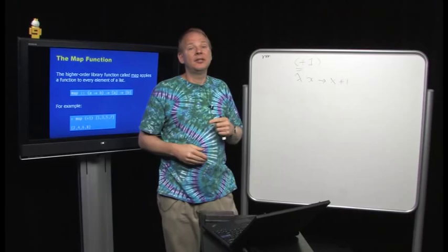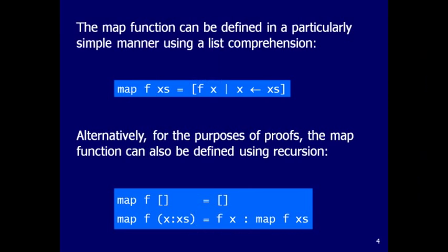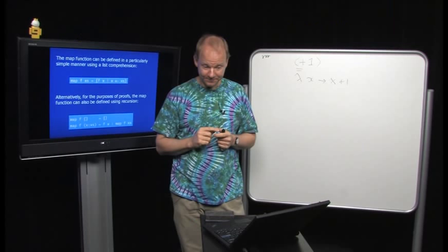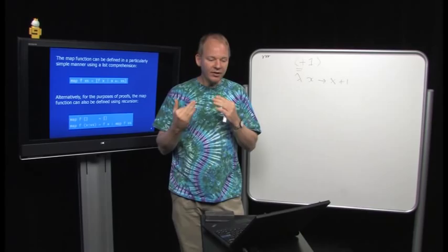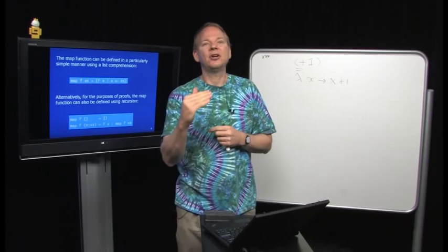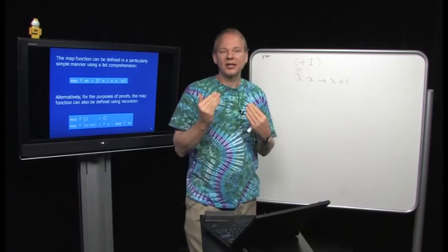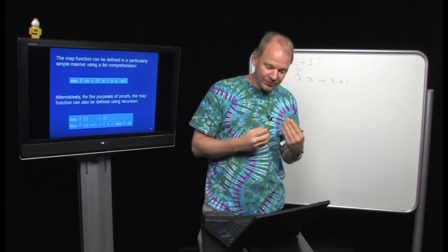There are two ways to define `map`. The first uses list comprehensions: `map f xs = [f x | x <- xs]` — you take all elements out of the list and apply the function to each, returning that as a list. For purposes of proofs it's often easier to define map recursively, though these definitions are exactly equivalent. To define lists using recursion we do the usual thing of defining it by induction over the structure of the list.